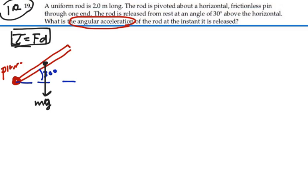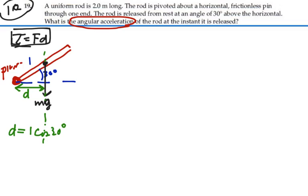This force has a moment arm — the pure distance from the pivot to the line of action of the force — and we'll call that distance D. Looking at this triangle, with the rod being 2 meters long, the hypotenuse to the center point is going to be 1 meter long, and hence this would be the adjacent side. So D equals 1 meter times the cosine of 30 degrees. Cosine is 0.866, so D is 0.866 meters.